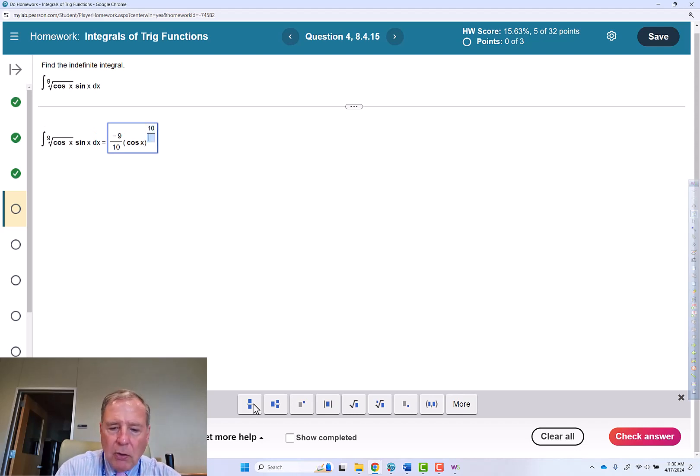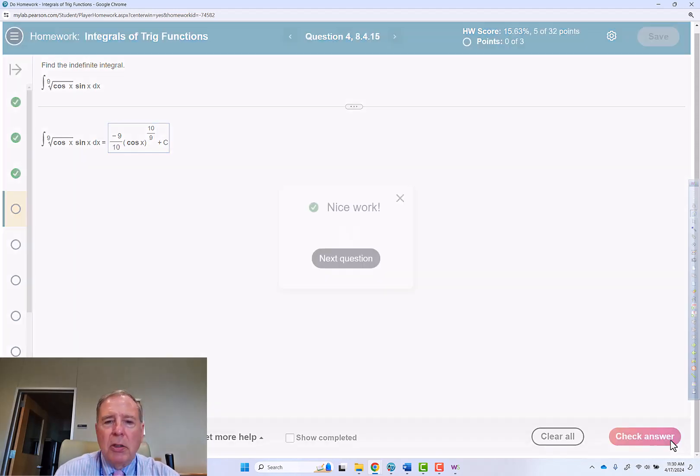then 10 over 9 power. Get out of the exponent, then plus c. Check answer.